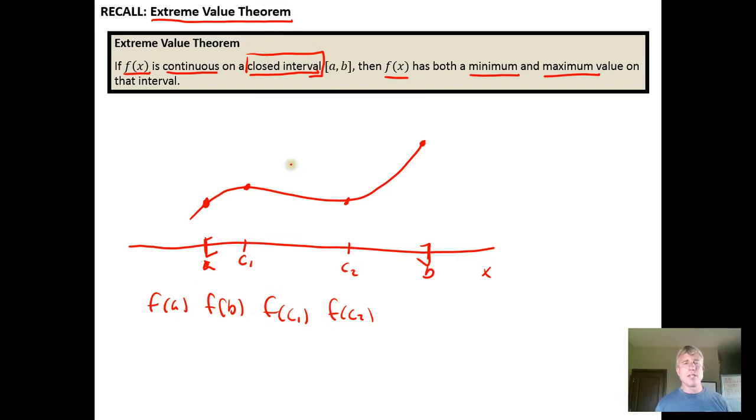And then we were guaranteed by the extreme value theorem that one of these outputs, or possibly more, would have the smallest value on the closed interval. So it's possible to get the same largest value twice, for example, or the same smallest value twice. But we're guaranteed there's a smallest value and a largest value on a closed interval.